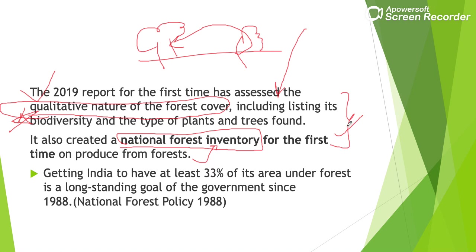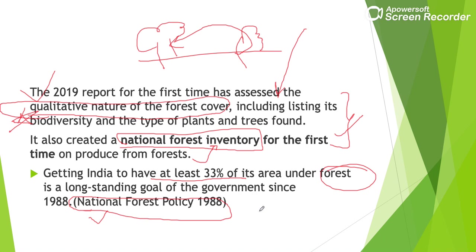If we talk about India's National Forest Policy of 1988, it states that at least 33% of India's area should be under forest cover. This policy was made in 1988 and we have not been able to achieve this target even today.